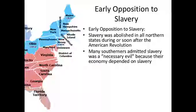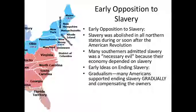Abolitionism is going to be the most significant reform movement of the antebellum period — probably the most significant in the entire history of the United States. Regarding the ending of slavery, there were some earlier ideas: one was that slavery needed to end gradually so the southern economy could adjust, maybe industrialize or find other means of production, and that owners would be financially compensated for the loss of their so-called slave property.